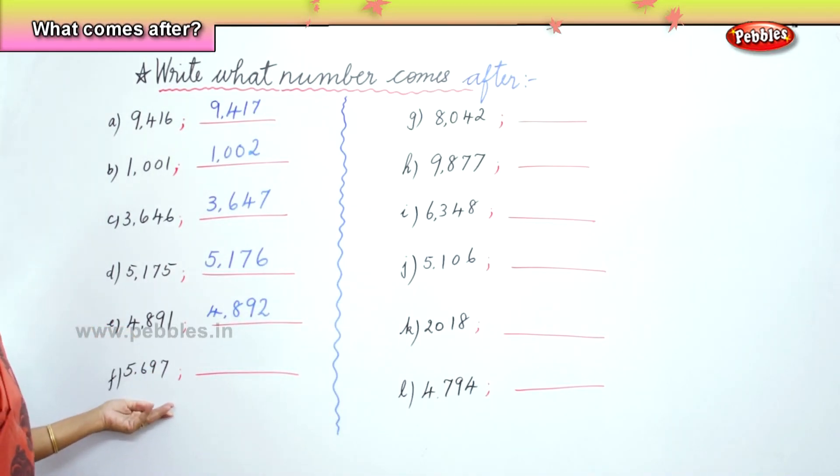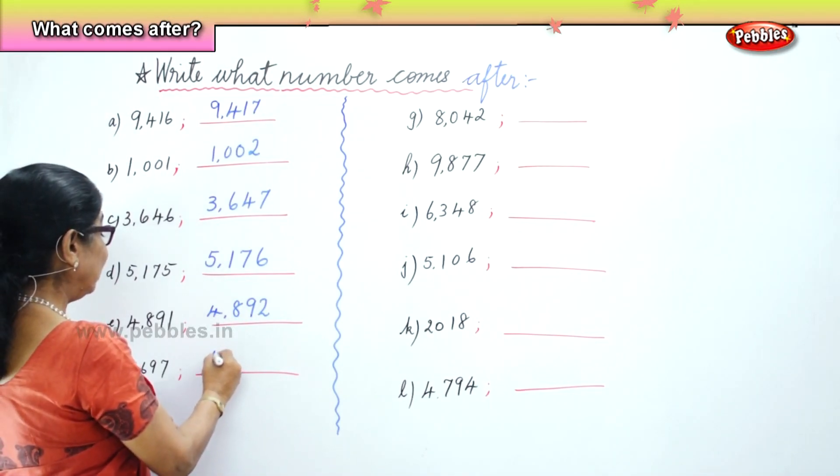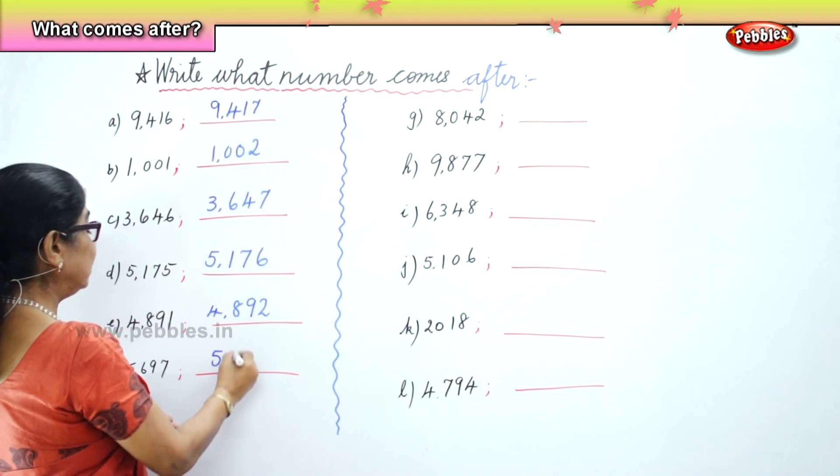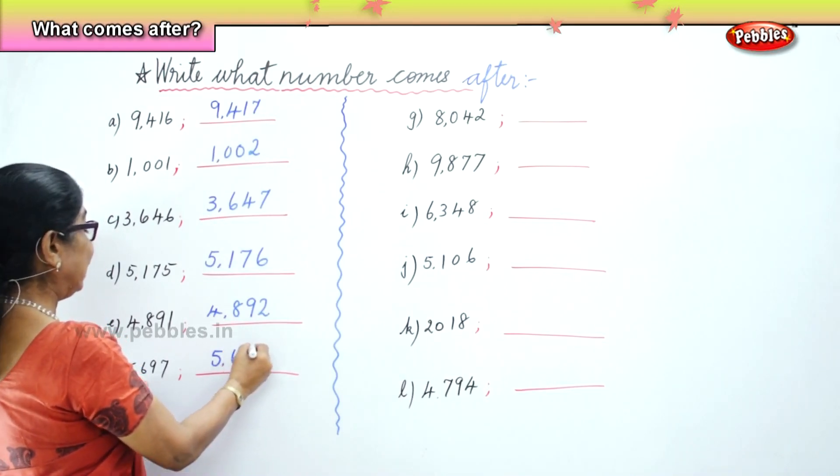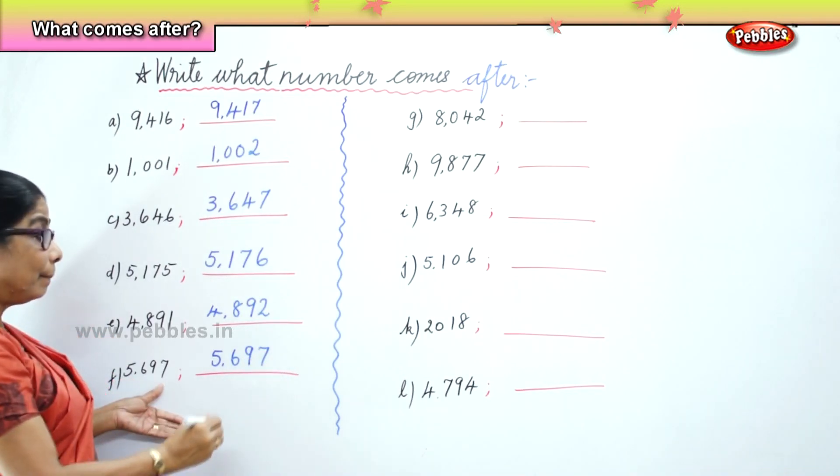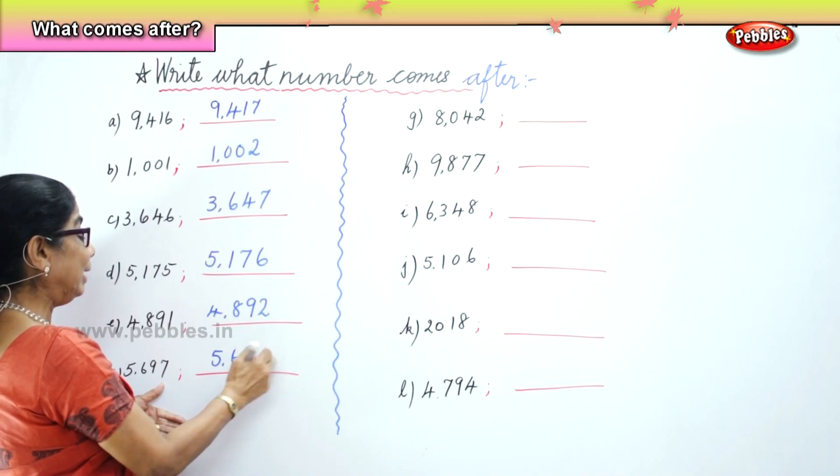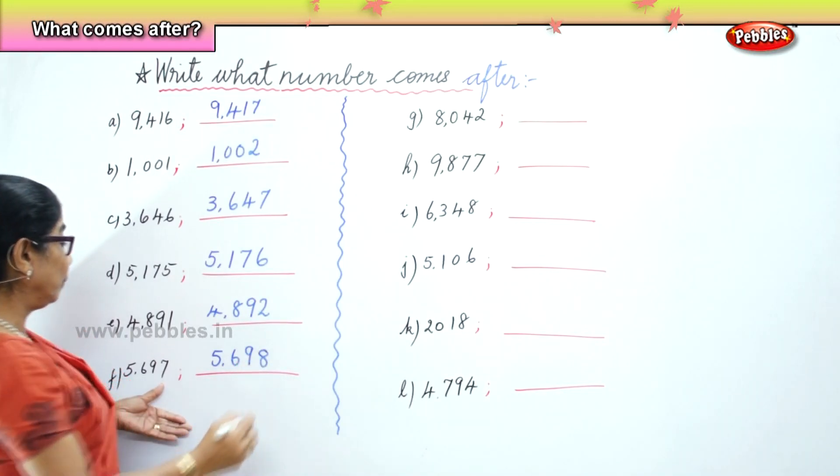Next we have 5,697. So what the number that comes after? 5,697. But after 97? 98. Very good. So 97, 98. Next.